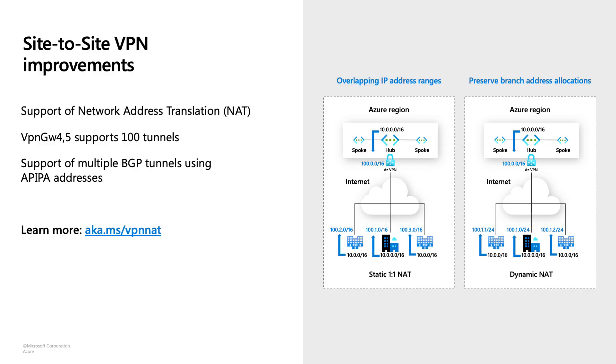Now let's look at the Site-to-Site VPN. Site-to-Site VPN connects your branch office to Azure. An important feature we introduced is NAT — Network Address Translation.